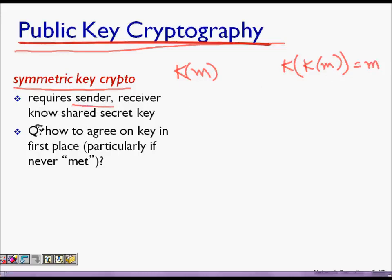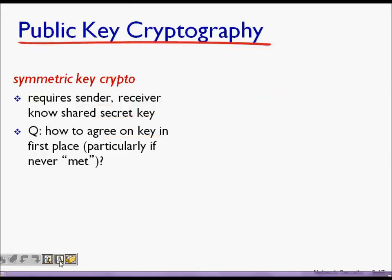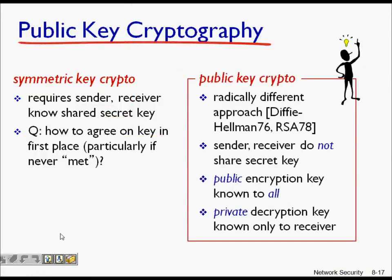The sender and receiver should agree on a shared secret key, so that the encrypted message cannot be understood by others. But the problem is: how to agree on a key in the first place, particularly if we have never met.